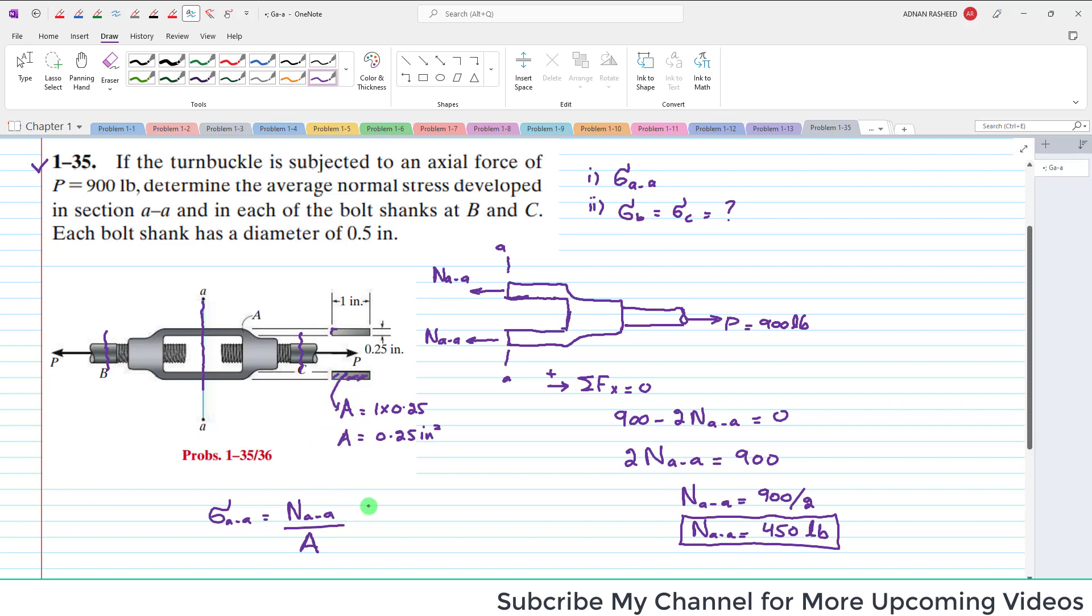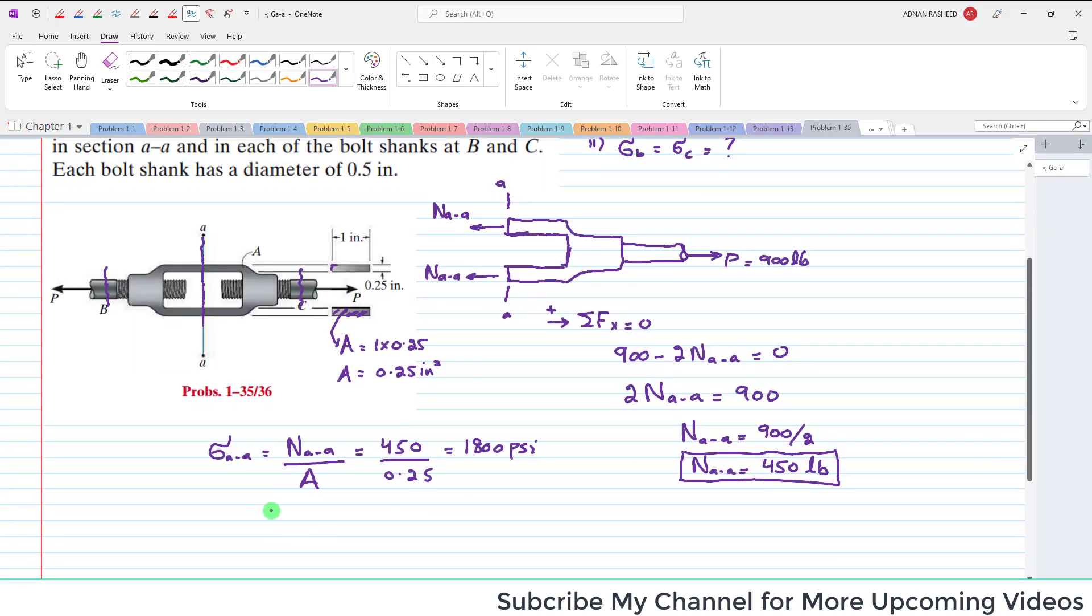I will write down the value: 450 divided by 0.25. That will be equal to 1800 pound per square inch, which is psi. Or you can also write sigma A-A is equal to 1.80 ksi.